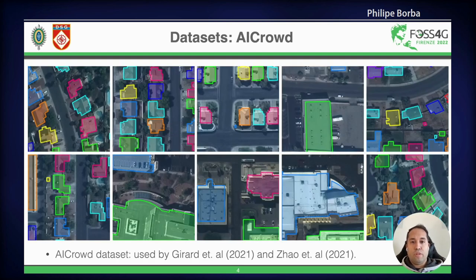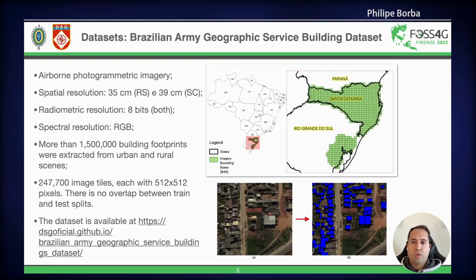We used the AI Crowd dataset, which is composed mainly of urban areas. It was used by Gerard et al. and Zhao et al., both of which were my base articles for this research. We also built the Brazilian Army Geographic Service building dataset, which is composed of airborne photogrammetric imagery with spatial resolution of 35 cm and 39 cm. The images are from the states of Rio Grande do Sul and Santa Catarina. All images have radiometric resolution of 8 bits and spectral resolution RGB.